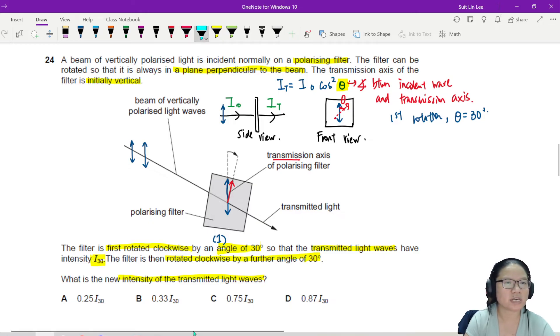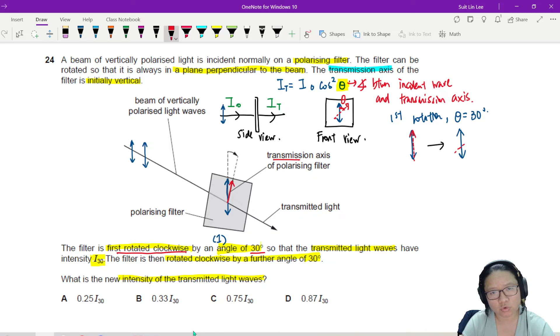So how do I know? Because it says the transmission axis is initially vertical. So this was your wave. This is your transmission axis. They are both vertical. First rotation, I will rotate the axis so that it is rotated clockwise by 30 degrees.